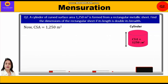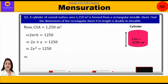Curved surface area equals 1250 m², which means 2πr × h = 1250. Substituting, we write 2x × x = 1250, so 2x² = 1250, therefore x² = 1250 ÷ 2 = 625.